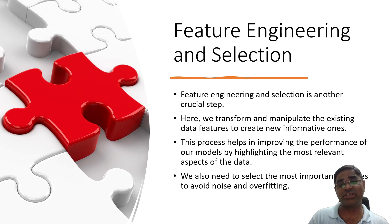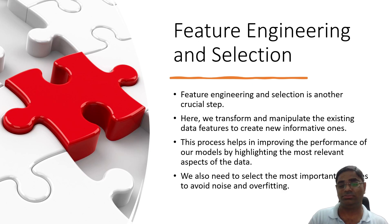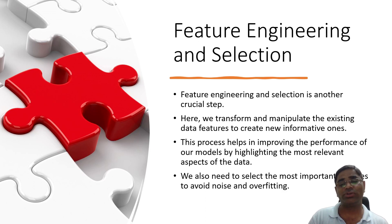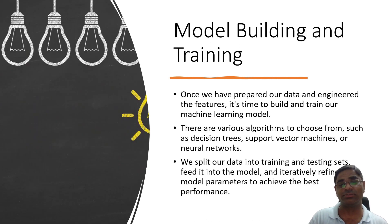The next step is Feature Engineering and Selection. In this step, we transform and manipulate the existing data features to create new information. This process helps in improving the performance of our model by highlighting the most relevant aspects of the data. We also need to select the most important features to avoid noise and overfitting.